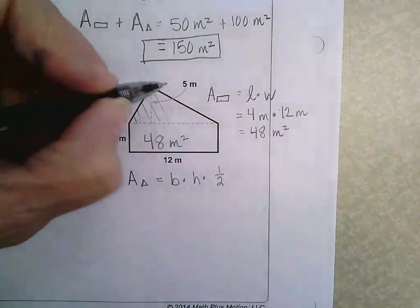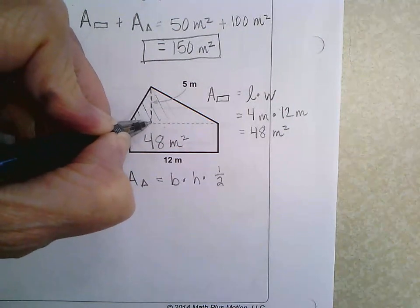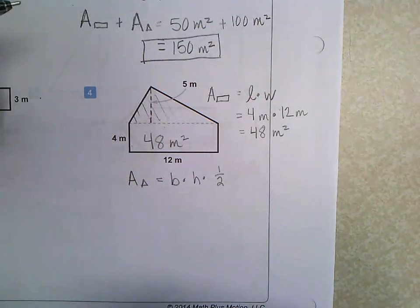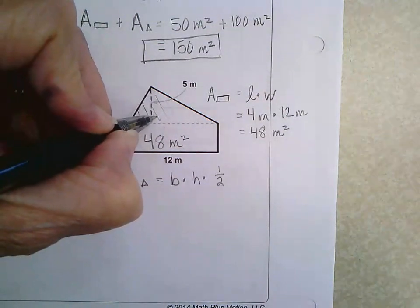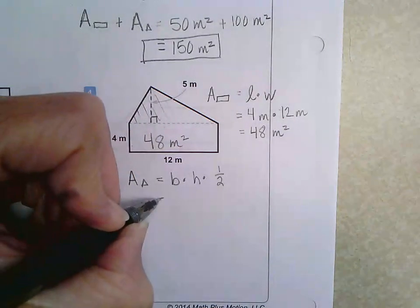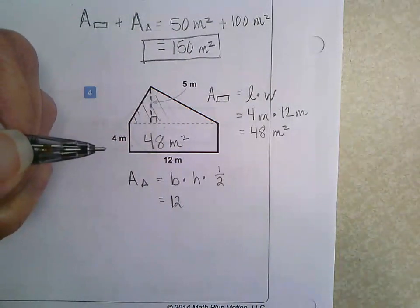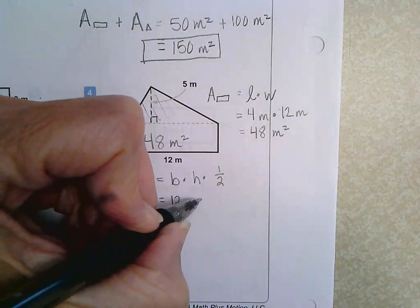Okay. So let me just do base times height times one half. And then we do 12 meters times 5 meters equals...